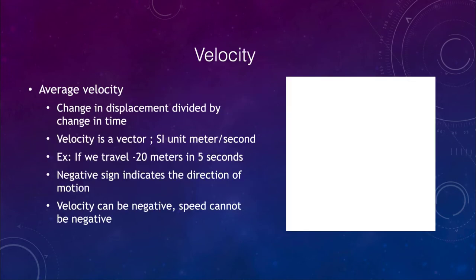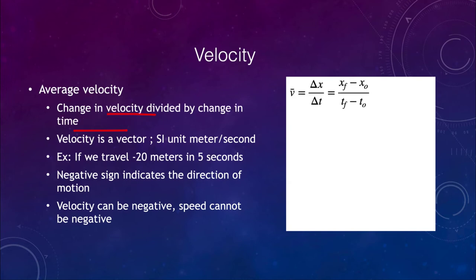We will look at average velocity, which is given by the displacement divided by the change in time. We can write that as an equation: delta x is the change in displacement, delta t is the change in time as we talked about. We can calculate those by looking at the final displacement minus the initial displacement for the change in displacement, and similarly for time.